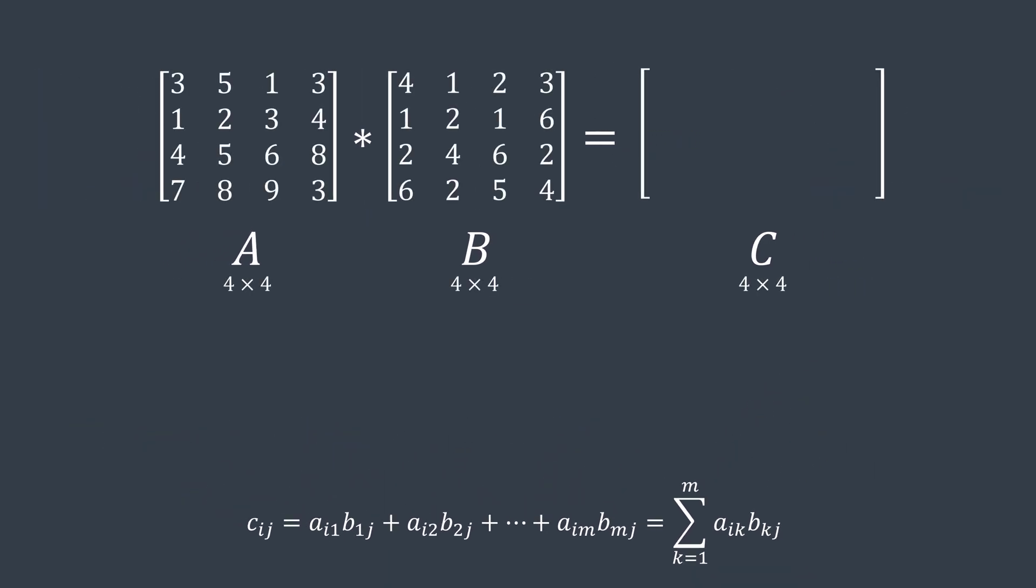For example, if we want to multiply these two matrices, C11 will be 3 times 4 plus 5 times 1 plus 1 times 2 plus 3 times 6, which is 37. C12 will be 3 times 1 plus 5 times 2 plus 1 times 4 plus 3 times 2, which is 23, and so on.